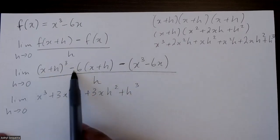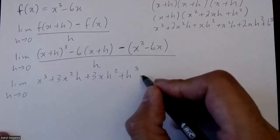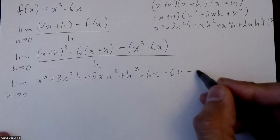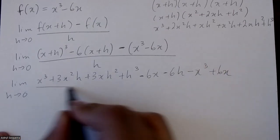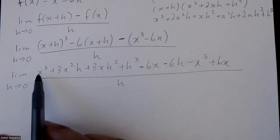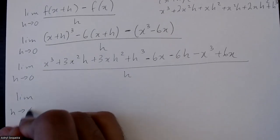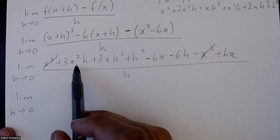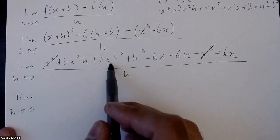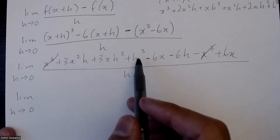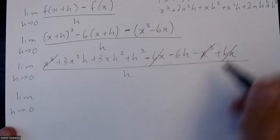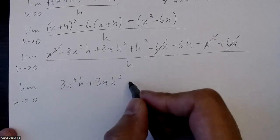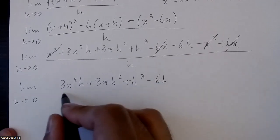Now expand the −6 into the bracket: −6x − 6h. Then expand the negative into the f(x) bracket: −x³ + 6x. Dividing all by h, we combine like terms. The x³ and −x³ cancel off, and the −6x and +6x cancel off. We're left with 3x²h + 3xh² + h³ − 6h, all divided by h.